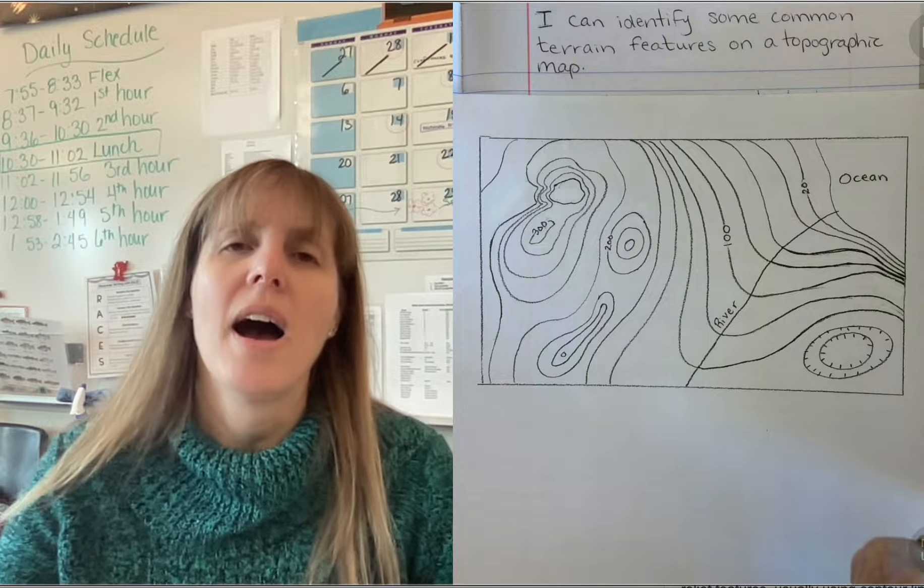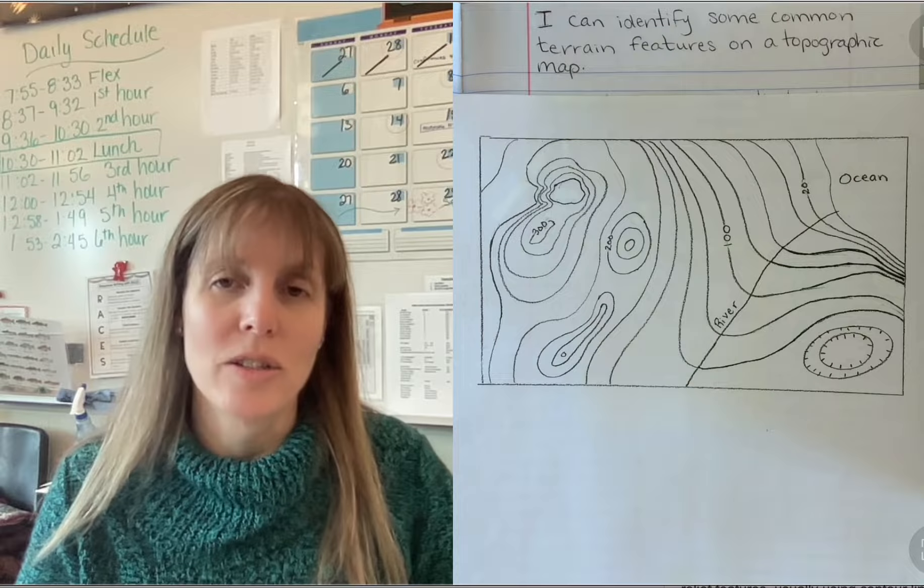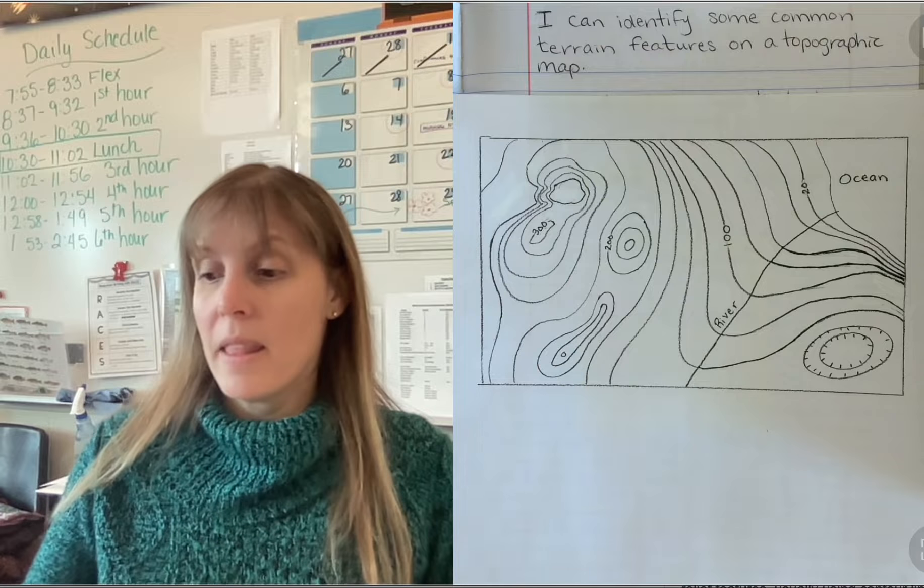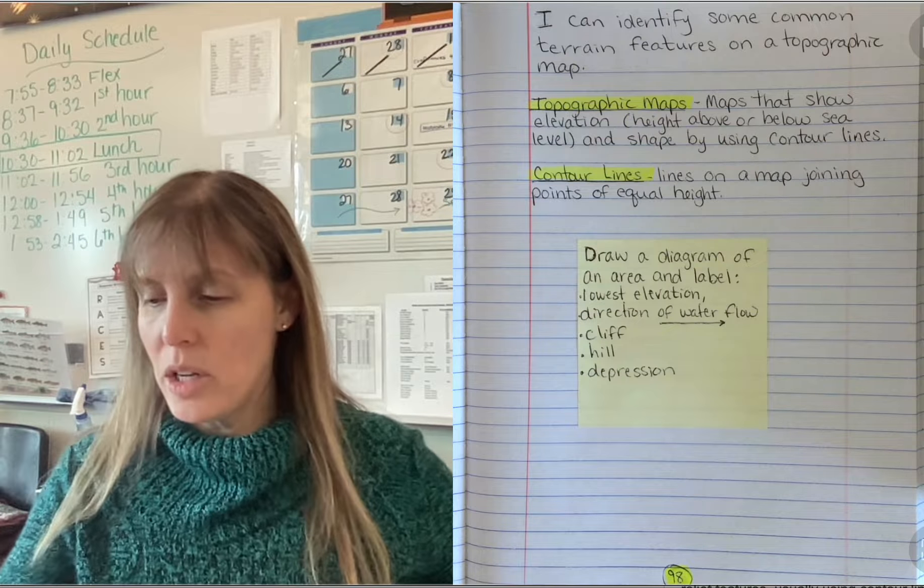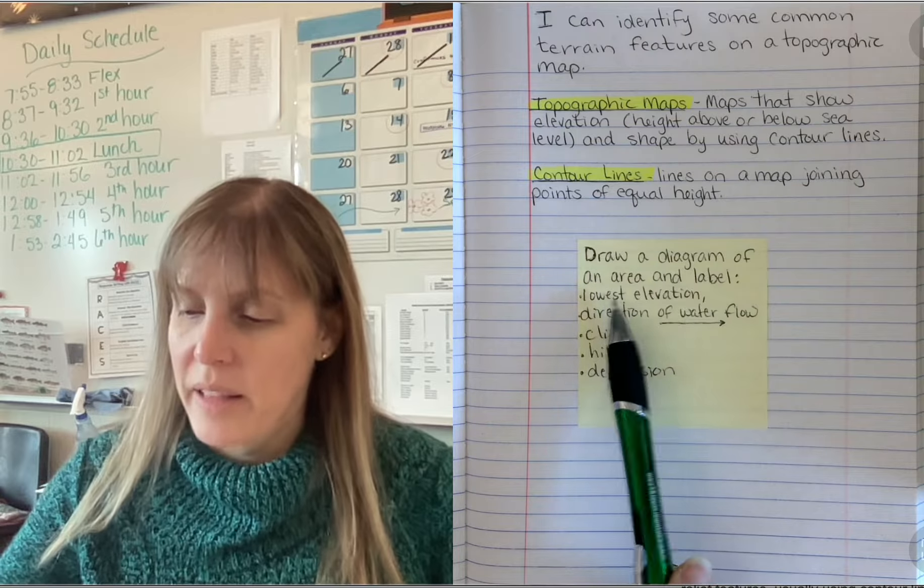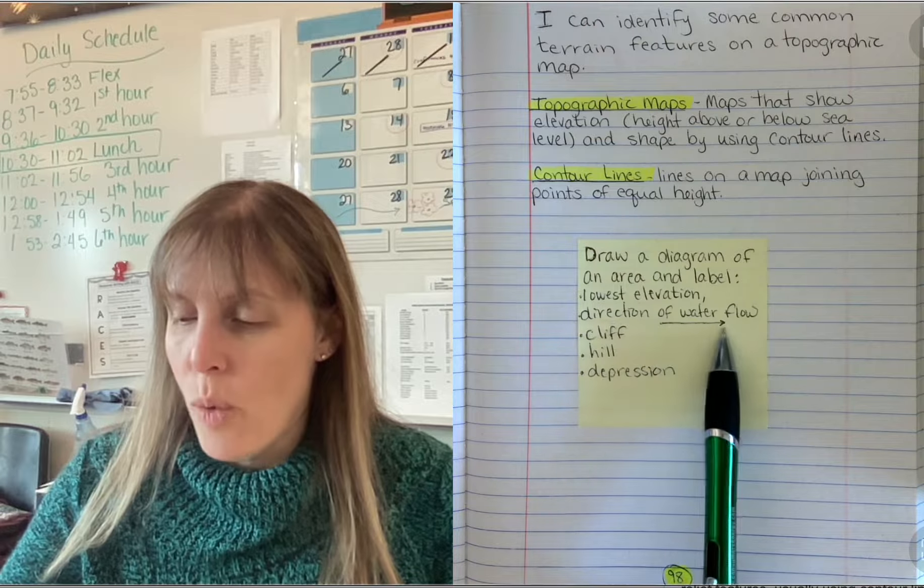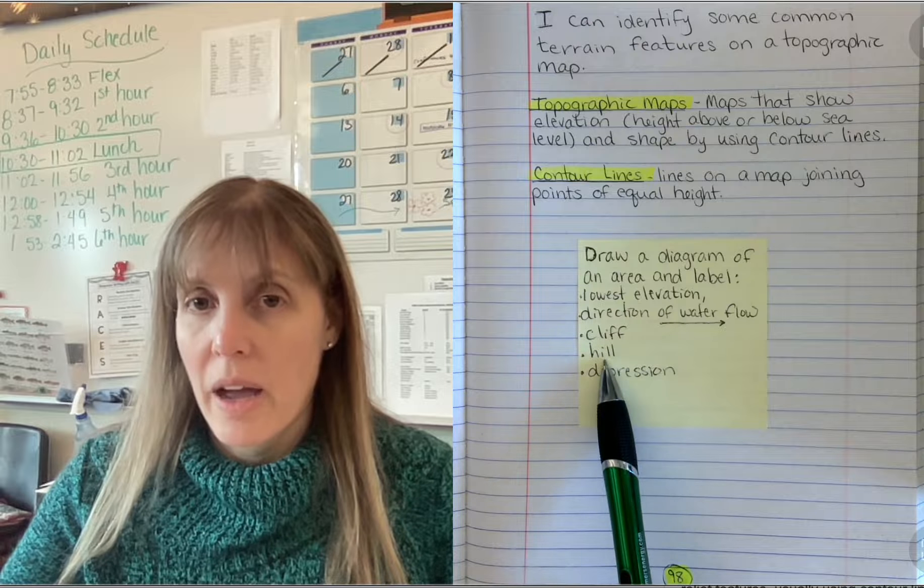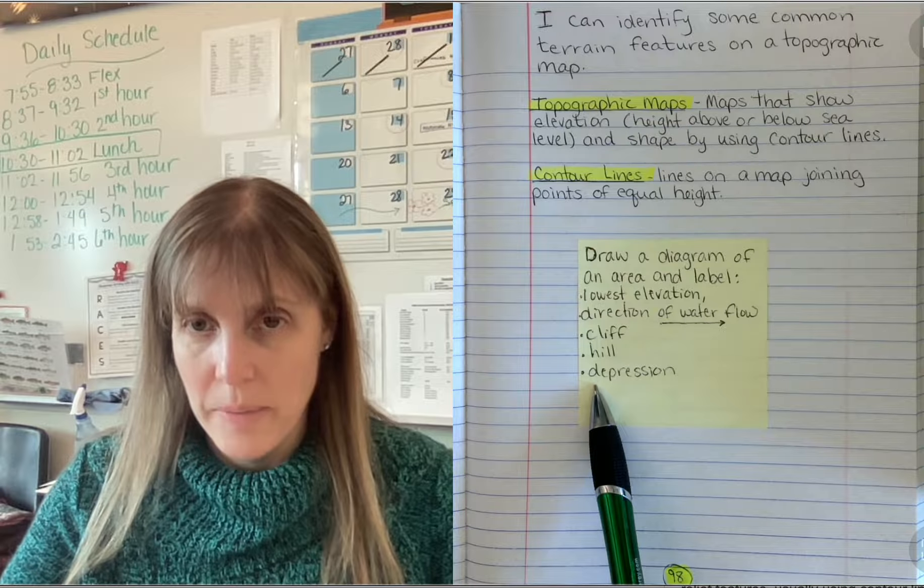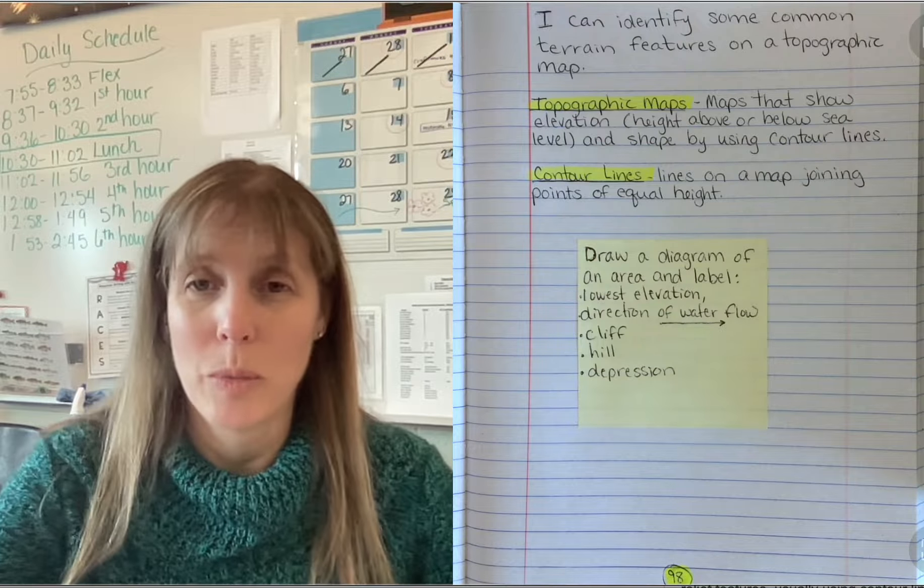You're going to learn today how to read a topographic map. And then I'm going to ask you to label a topographic map. I'm going to actually give you this diagram. And I want you to label the lowest elevation, the direction of water flow, just use an arrow, a cliff, a hill, and a depression to finish notebook page 98. And then I'm going to ask you some questions about it.